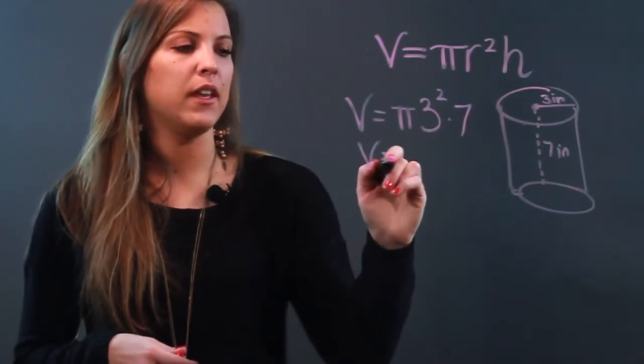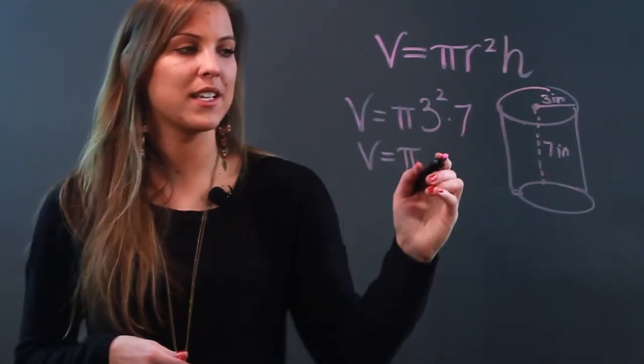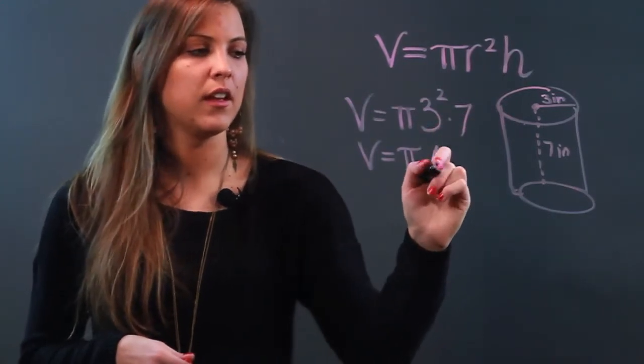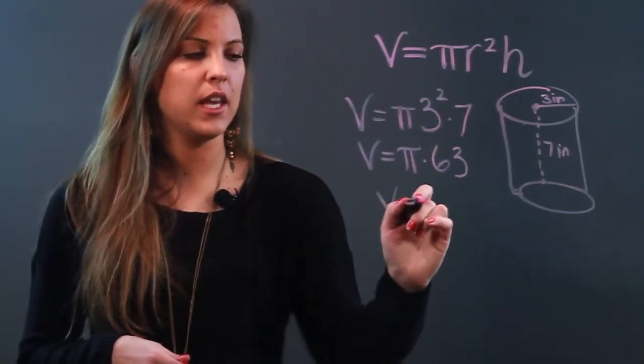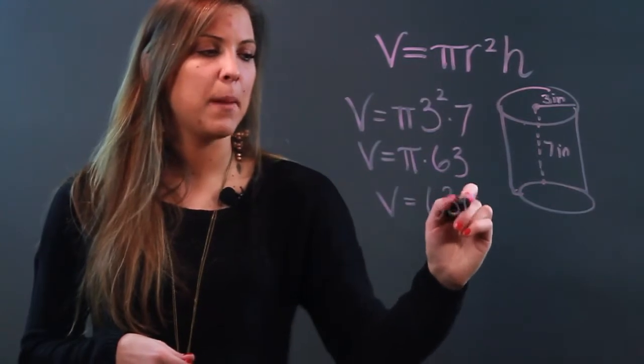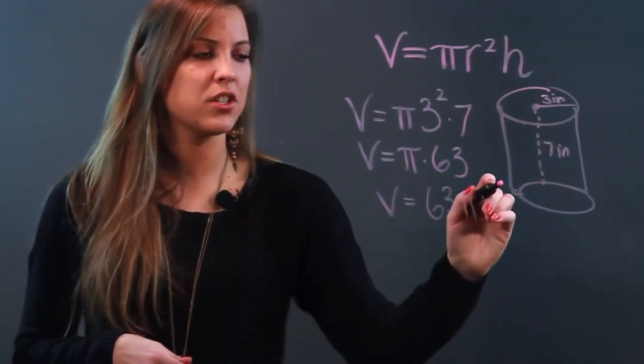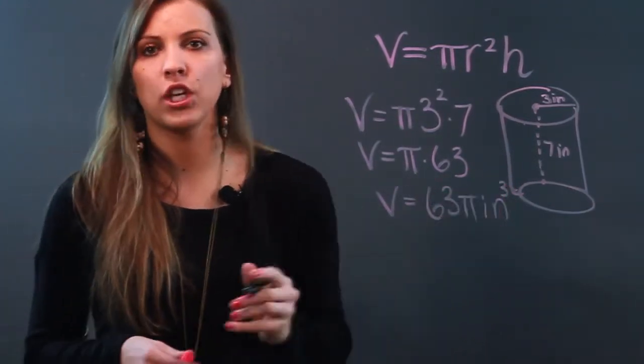So I get v equals pi times 3 squared is 9. 9 times 7 is 63. And then I can just rewrite that as v equals 63 pi. And because it's inches, I'm going to write inches cubed. My volume is always in cubic units.